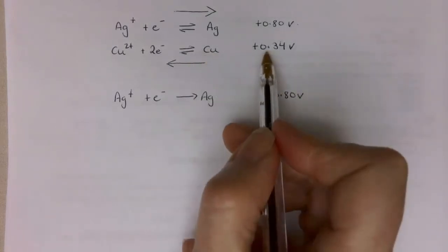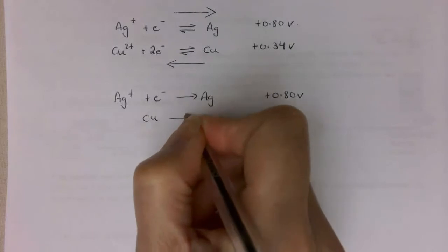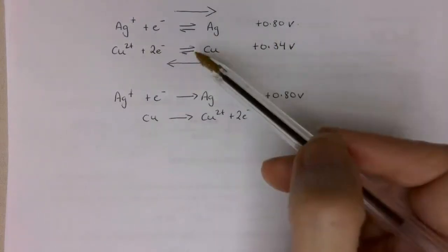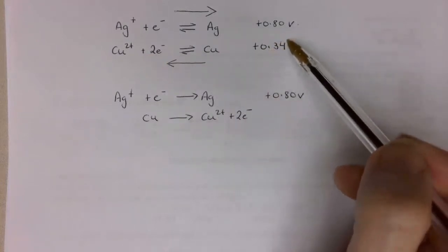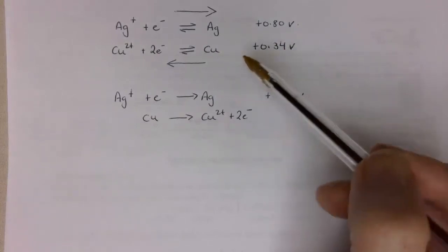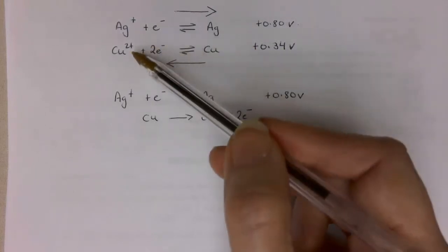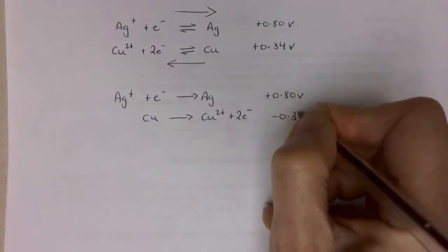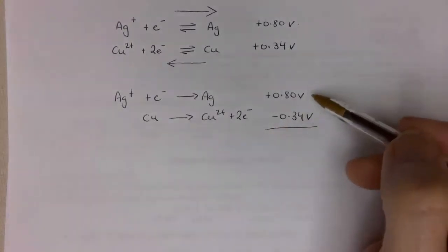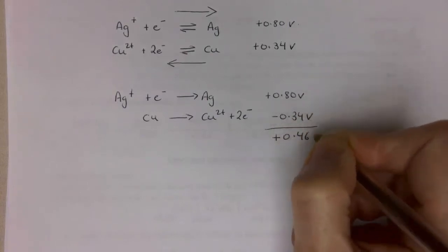Because copper is the more negative, it's written backwards: Cu → Cu²⁺ + 2e⁻. Because this is written backwards, we have the same magnitude but a different sign — it's a lot like energetics, where if a reaction is exothermic in the forward direction it's endothermic in reverse but the same magnitude. So here the copper half cell becomes minus 0.34 volts. To work out the E-cell value we simply add these two numbers together, and we get plus 0.46 volts. The sign is very important.